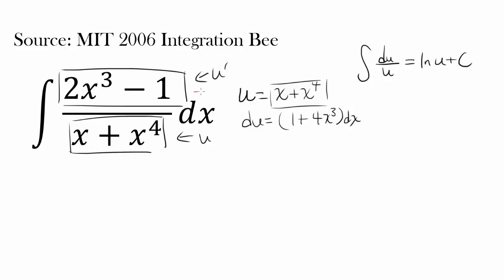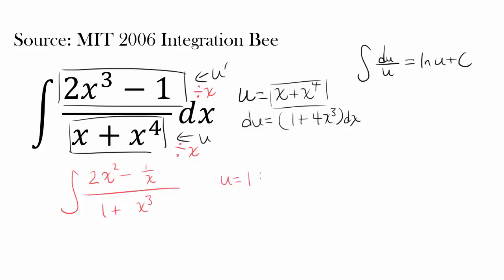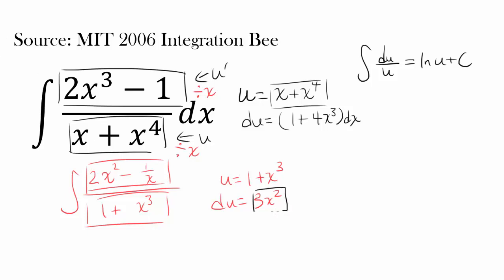Let's try doing some manipulations and see what's happening within the fraction. Dividing both sides by x, we get 2x squared minus 1 over x, all over 1 plus x cubed. Now let's try letting our u be 1 plus x cubed down below. Our du is simply 3x squared dx, and obviously this is not 3x squared. We are still pretty close — 3x squared is pretty close to 2x squared — but we are not accounting for negative 1 over x.